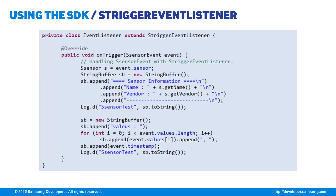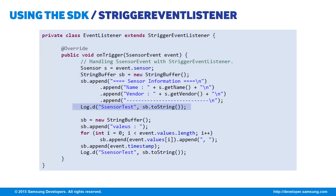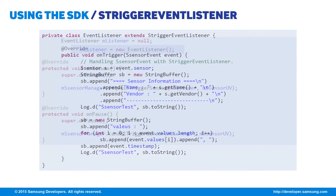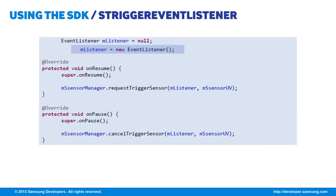To handle the sTriggerEventListener, we first need to create a listener class which extends sTriggerEventListener, called EventListener. Next we'll need to implement the abstract methods. In our case, we only need to implement the onTrigger method, which accepts an sSensorEvent as parameter. We declared an sSensor object s, which gets the sensor object from the sSensorEvent parameter. We instantiate a StringBuffer object SB to collect information from the sensor, which is displayed in the log. After getting the sensor details, we instantiate the StringBuffer object again to specifically get the values and timestamp from the sSensorEvent object. The values are then displayed in the log using a for loop. We then declare mListener, an object of type EventListener.